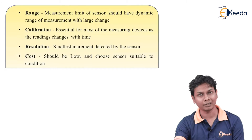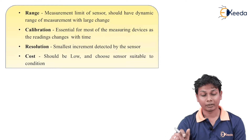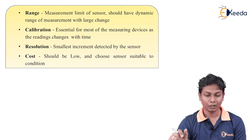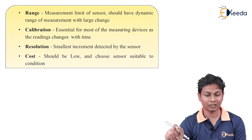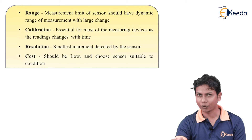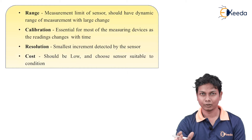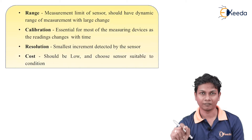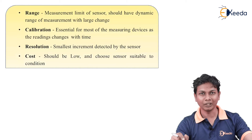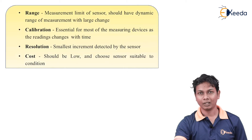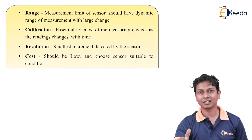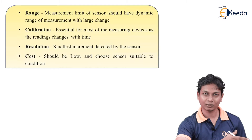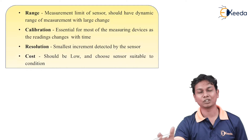The next criterion is range. The range of a sensor should be limited within a dynamic range. The measuring range of a sensor starts with a minimum and ends with a maximum. The output should be given by the sensor for both the minimum range and the maximum range.